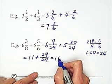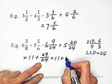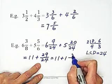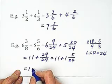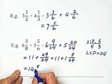We come to 11, carry on, plus 1 and 5 over 24. Then we got the answer is 12 and 5 over 24.